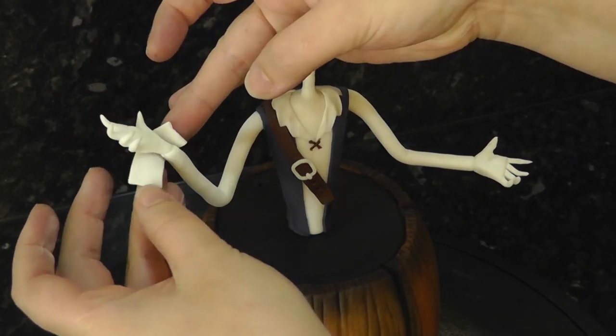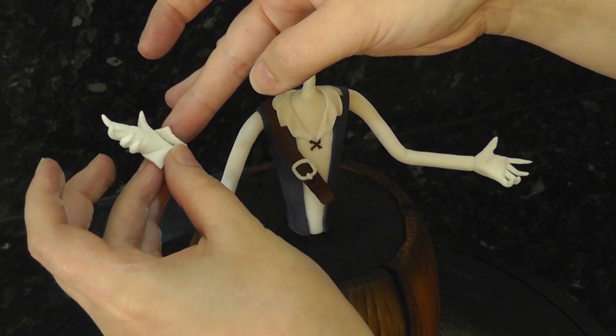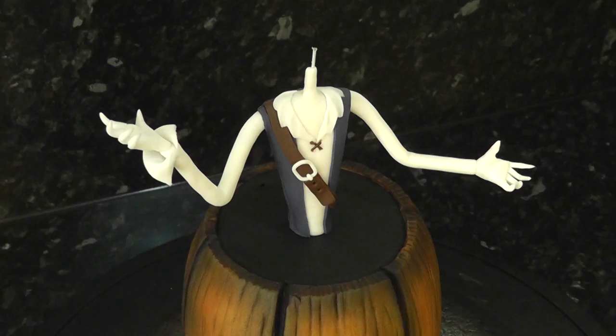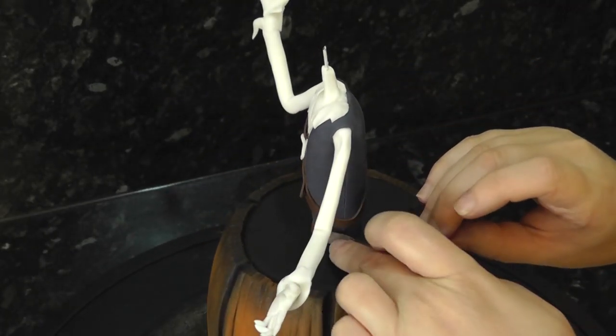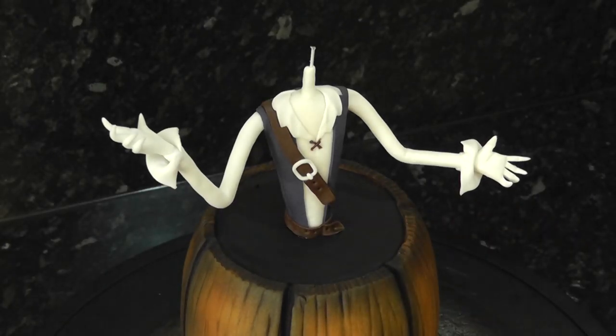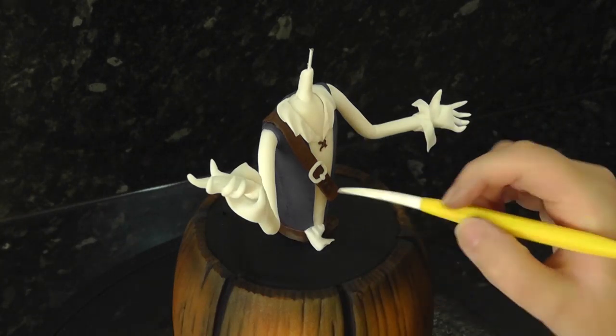For flowy sleeves, add a thin rectangle of paste, wrap it around and join it. Add another belt around the waist in brown paste. This one is chocolate flavoured by Renshaws. Add a scrap piece of fabric hanging over the belt with white paste.